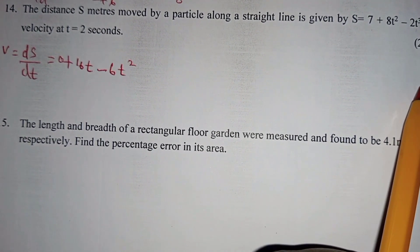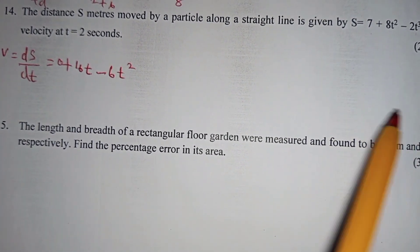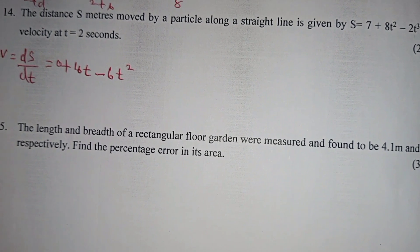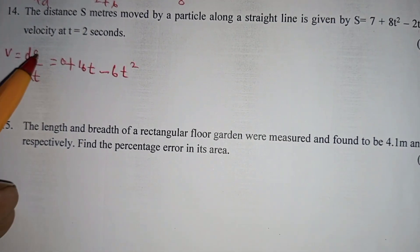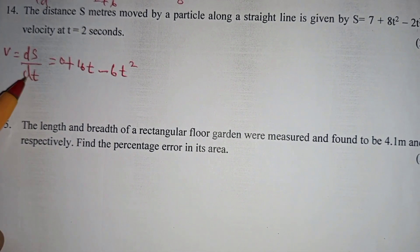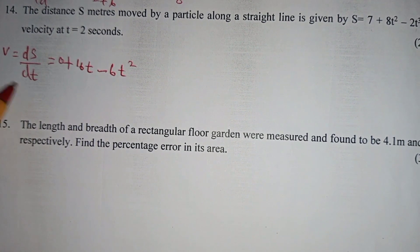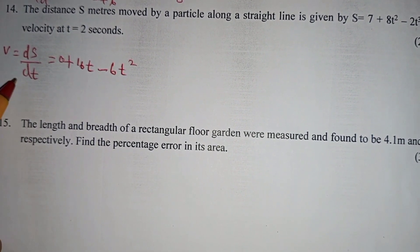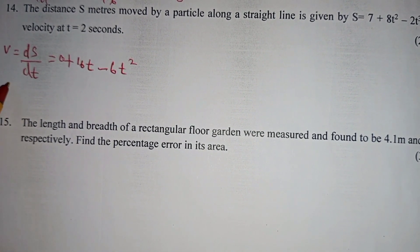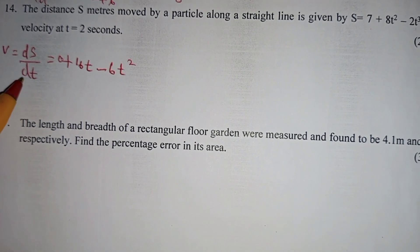When you have a polynomial and you are going to differentiate it, you differentiate it term-wise. Fact number 2 is that when we differentiate displacement with respect to time, that gives us velocity. Velocity is defined as the rate of change of displacement per unit time.